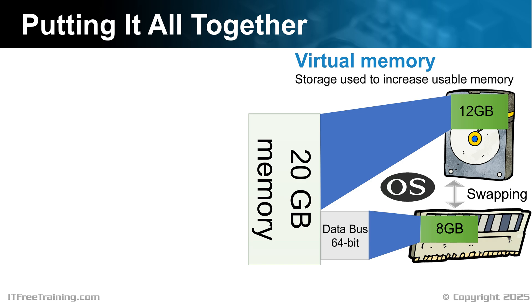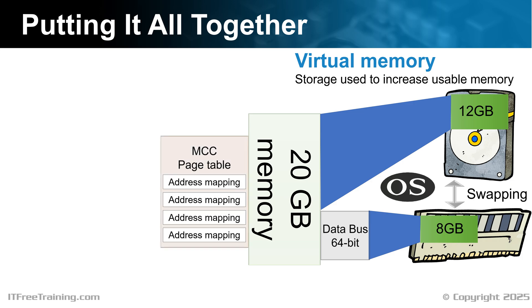In order for software to run efficiently, a translation layer is added so the software does not need to worry about where the memory is stored. The translation layer is in the memory controller — this used to be a separate chip, but nowadays it is located inside the CPU. The memory controller provides the translation layer and is connected by an address bus. In x64 CPUs, the address bus needs to support a minimum of 48 bits, which means it can access 256 terabytes. This is the minimum and could be increased all the way up to 64 bits. Even in the largest computers, 256 terabytes should be enough currently, and if not, it can always be increased while remaining compatible with older 64-bit software.